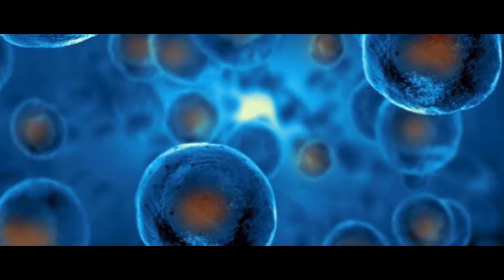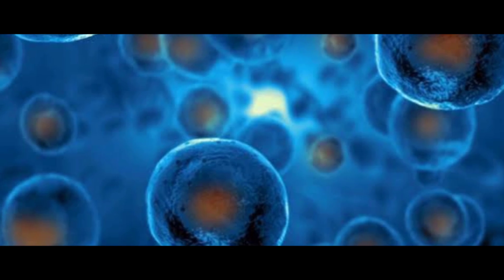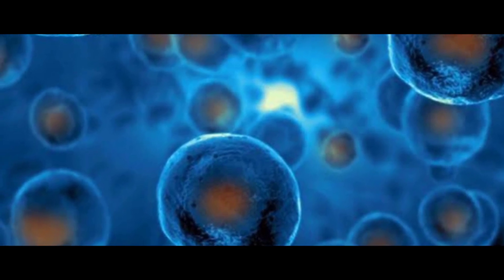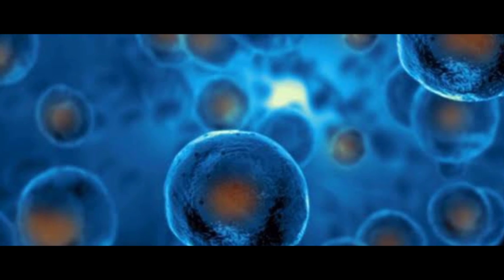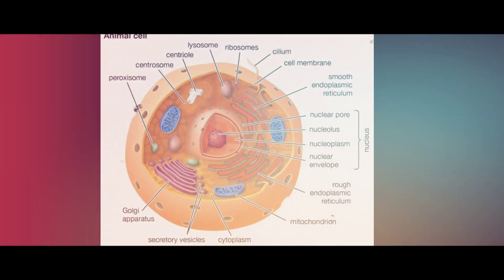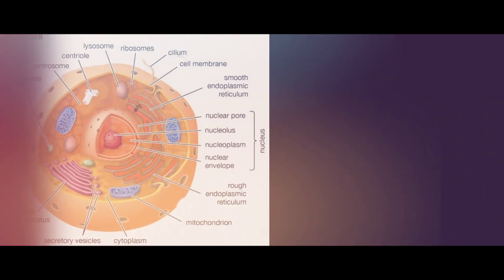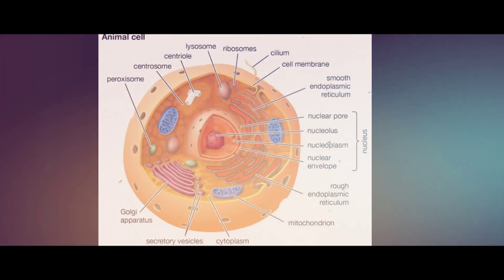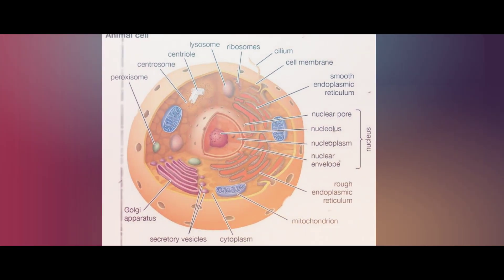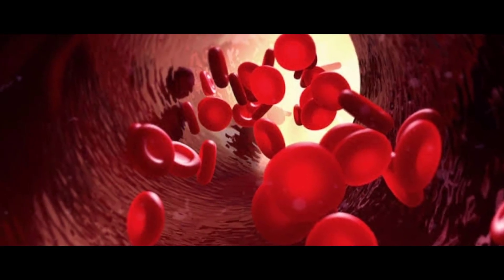Now, moving on from cyanide types, we will talk about cell structure and ATP. Cell organelles in our body include: Nucleus, ER, Golgi Complex, Vacuole, Plasma Membrane, and Mitochondria. Mitochondria is one of the most important organelles — it powers how our body works, related to oxygen and energy production.